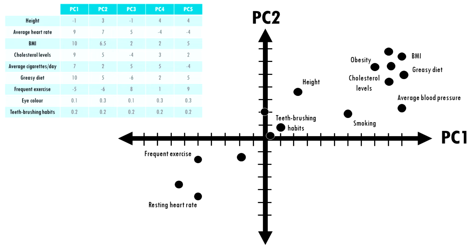Let's just plot some of them. For example, for PC1, which again is the most important PC, we might expect to see variables like greasy diet, obesity, heart rate, or frequent exercise to have really large weights, because they contribute a lot. And maybe variables like how many times you brush your teeth a day have a lower weight.